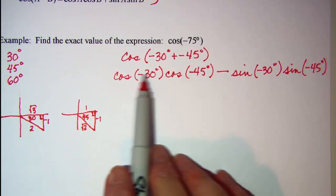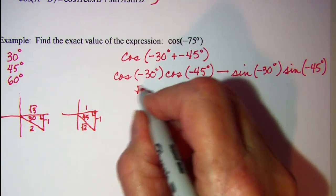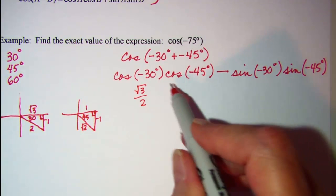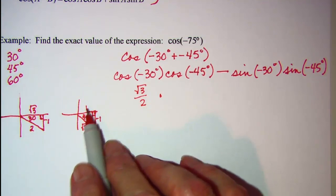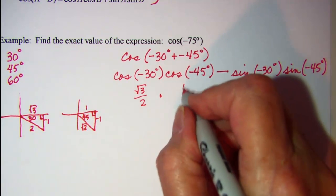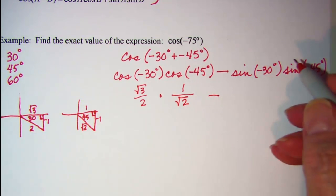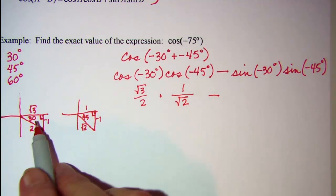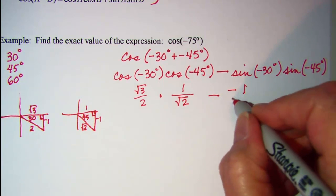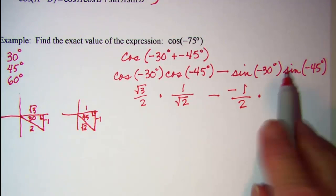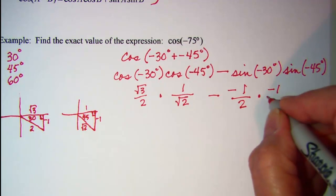All right, so cosine of negative 30, cosine is adjacent over hypotenuse, so this ratio is root 3 over 2 times, and I want the cosine of negative 45, cosine is adjacent over hypotenuse, so 1 over root 2. Subtract, and then the sine of negative 30, the sine is opposite over hypotenuse, so negative 1 over 2 times, and then the sine of negative 45 opposite over hypotenuse would be negative 1 over root 2.